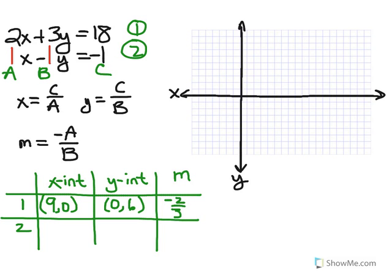For line 2, for the x-intercept, c is negative 1 and a is 1, so the x-intercept is negative 1. For the y-intercept, we have c over b, which is negative 1 over negative 1, which is positive 1. Finally, for the slope, we have negative a over b. Negative 1 over negative 1 is positive 1. These two lines do not have the same slope, so they will intersect somewhere.